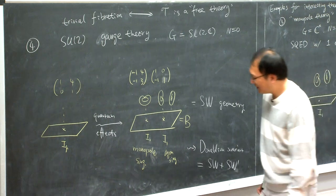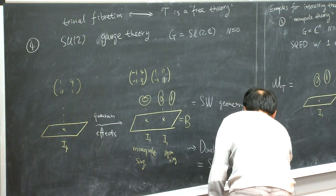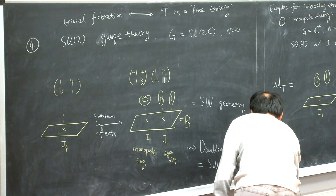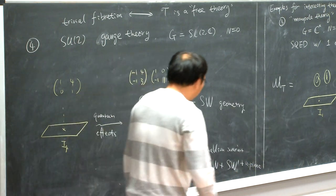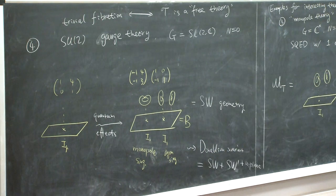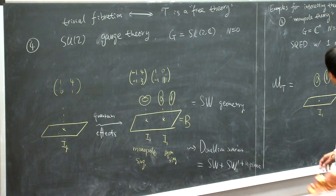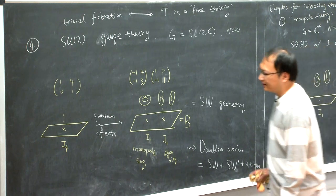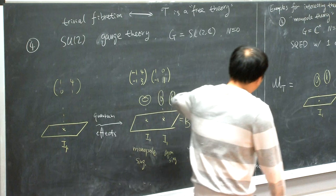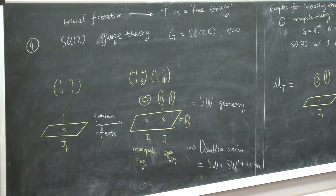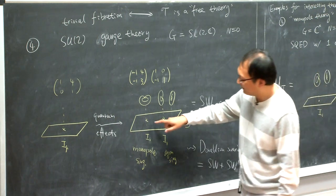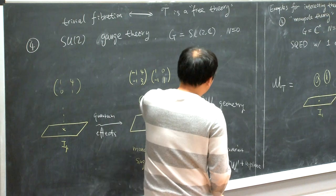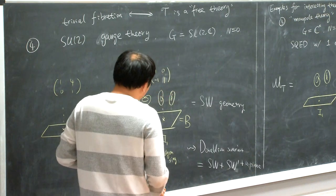The fact that there are two copies of the monopole theory on the U-plane is basically the physical reason for the Witten conjecture, which states that there's a way to decompose Donaldson invariants into a sum of two copies of Seiberg-Witten invariants. To be more precise, there is of course another contribution from the U-plane, which is exactly the focus of the previous talk.